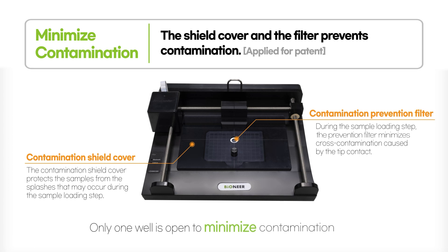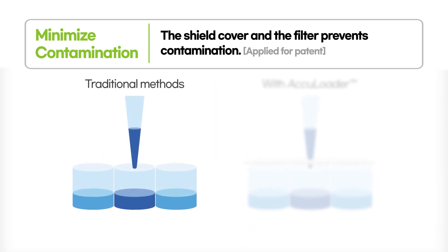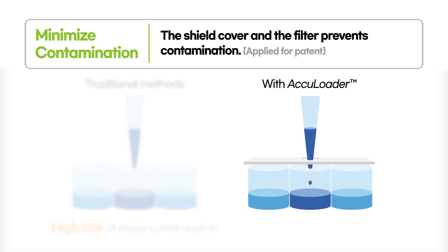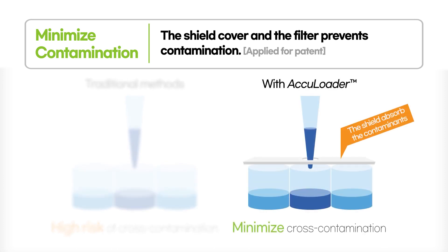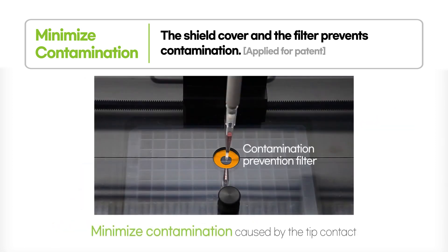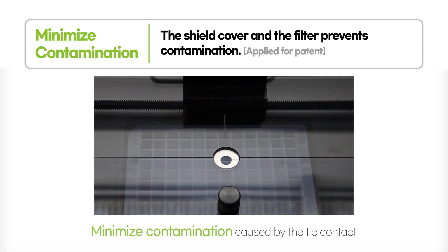AccuLoader minimizes contamination with a shield cover — only one well is open at a time to minimize contamination. While the traditional method creates a high risk of cross-contamination, the contamination shield minimizes cross-contamination caused by splashes, and the contamination prevention filter minimizes contamination caused by tip contact when loading samples.